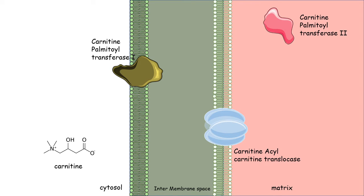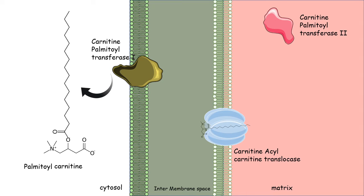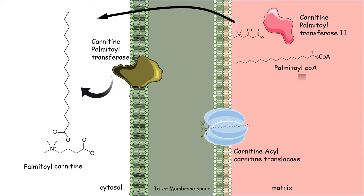First, palmitic acid is combined with carnitine to form palmitoyl-carnitine, a reaction carried out by CPT1. Palmitoyl-carnitine is then transported into the mitochondrial matrix via the translocase channel located in the inner membrane. Once in the matrix, CPT2 converts palmitoyl-carnitine into free carnitine and palmitoyl-CoA. The palmitoyl-CoA can then be used to generate acetyl-CoA, while the carnitine is shuttled back into the cytoplasm to perform another round of transport.